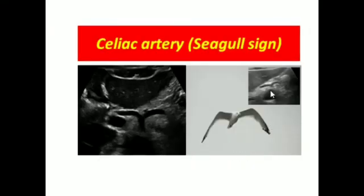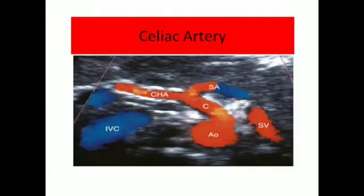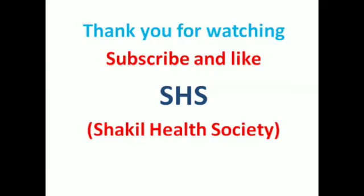In this image, this is the seagull sign. The same seagull sign appears here as well. This is the aorta, the celiac artery, the splenic artery, and the common hepatic artery — this is called the seagull sign. Thank you for watching; if you enjoyed the presentation, please subscribe and like.